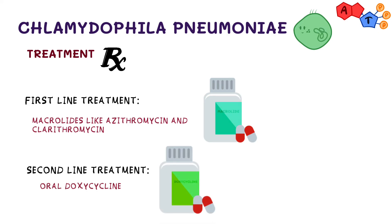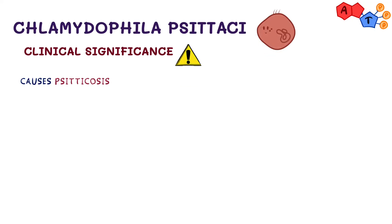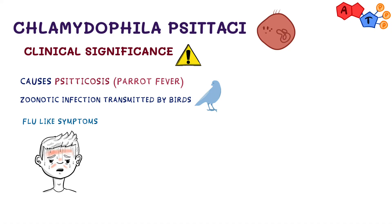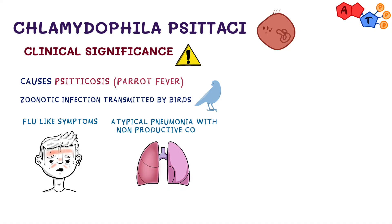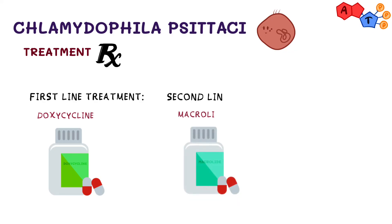Chlamydophila psittaci results in psittacosis, also known as parrot fever. It is a zoonotic infection from birds. Symptoms can vary greatly; during the acute onset, the patient usually has flu-like symptoms, especially fever, and can also get atypical pneumonia with non-productive cough, as well as headaches, arthralgia, and myalgia. For treatment, doxycycline is the first line and macrolides are the second.